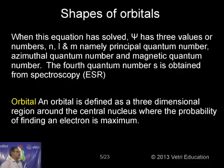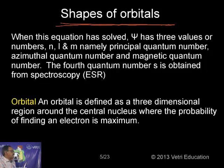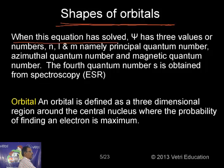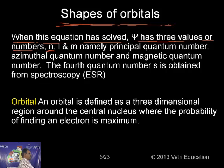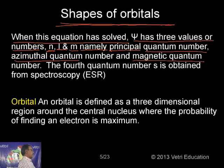When it comes to orbitals, we must know the shapes of orbitals — how many types there are and what their shapes are. When the Schrödinger equation is solved, ψ yields three numbers: N, L, and M — namely the principal quantum number, azimuthal quantum number, and magnetic quantum number.